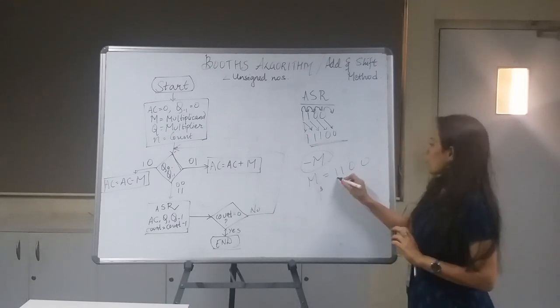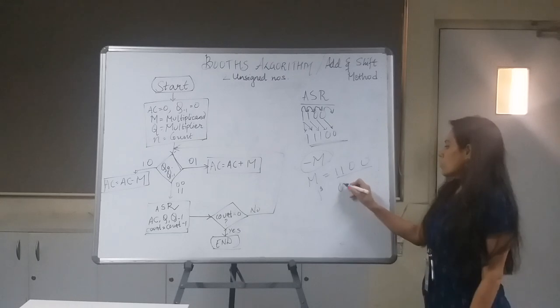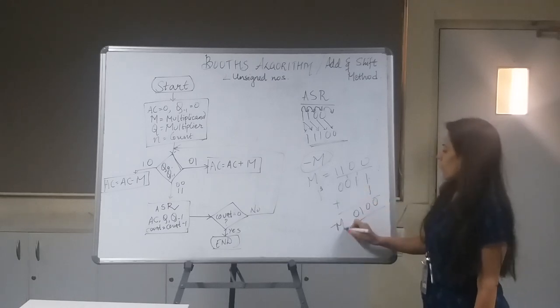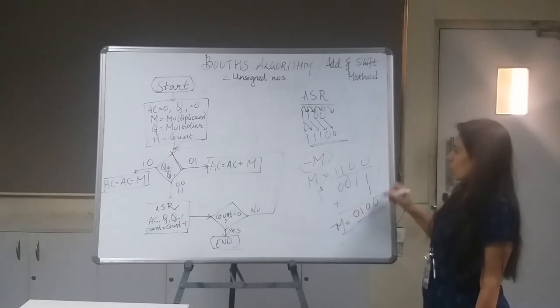So first we find out its one's complement. The one's complement of this number would be 0011, and then we add a one. So one plus one is one and zero, one plus one plus one is zero one, plus zero one, plus zero is one. So this is my minus M.